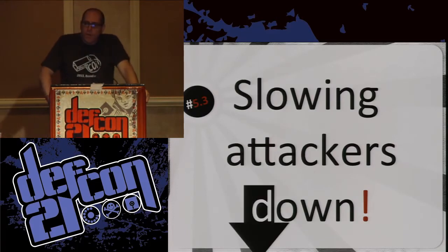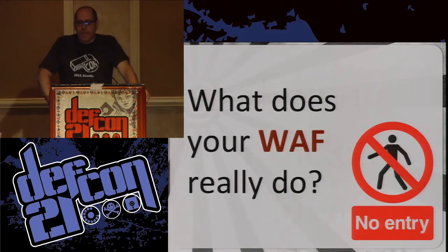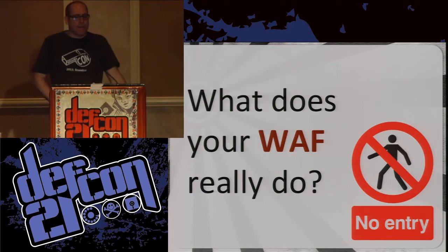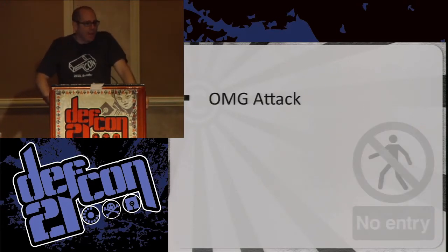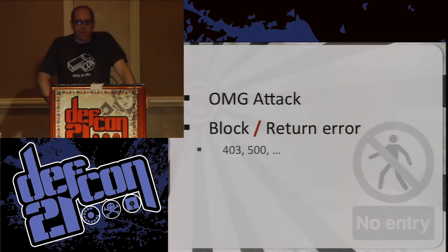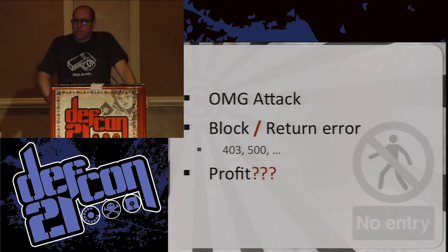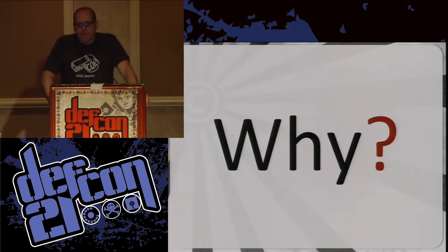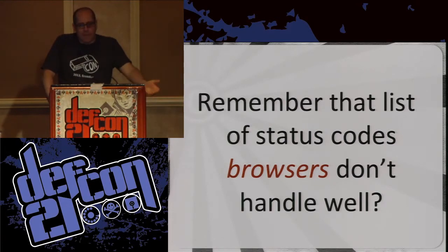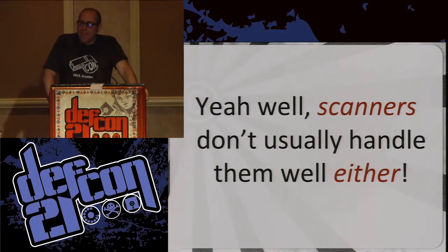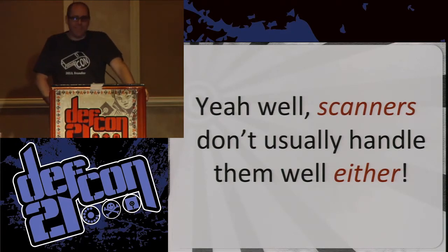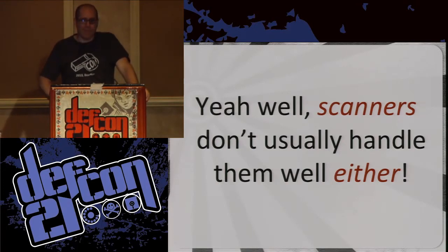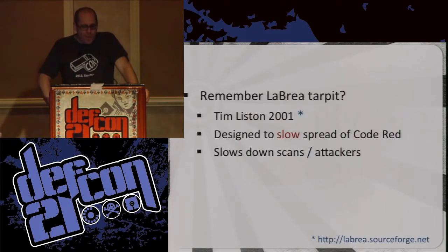We're not really slowing attackers down sufficiently. What's our WAF really doing at the moment? A standard WAF: 'oh my god, I'm being attacked' — block or return an error, whether 403, 500, 404, or 200 with a message telling them to piss off. For us as defenders, we've won nothing. All we've done is blocked an IP address. They come back with obfuscation, bypass it, game over. But remember this big list of status codes that browsers don't handle well — specifically the 100 stuff? Scanners don't like them either. Because a scanner thinks it's going to be a browser.